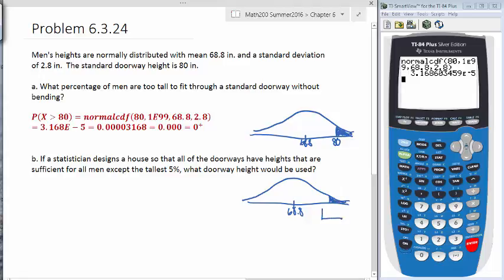So we essentially want to find out what this value is so that this area is 5%. So if the tallest is 5%, that means this cutoff height here will leave a 0.95 area on the left side, or 95% of the population will be smaller or not as tall as this cutoff height. So whenever we have something like this, we're going to call on the inverse norm function.